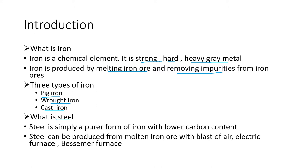What is steel? Steel is simply a purer form of iron with lower carbon content. Steel can be produced from molten iron ore with a blast of air, electric furnace, Bessemer furnace, and some other processes. In this lecture we will discuss the production of iron and steel, including the blast of air, electric furnace and Bessemer furnace processes, as well as the classification and identification of steel by chemical composition.